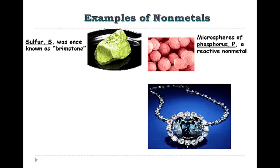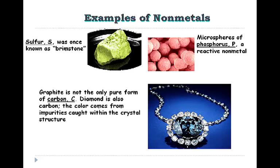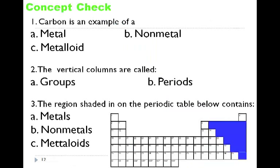There is phosphorus, a fairly reactive non-metal. And carbon: graphite is not the only pure form of carbon. Diamonds are also carbon. The color of diamonds comes from impurities caught within the crystal structure.